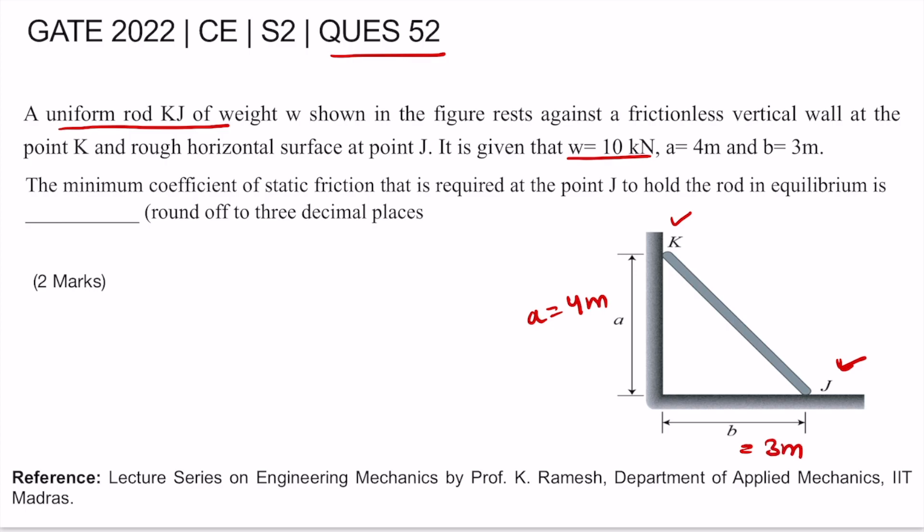The minimum coefficient of static friction that is required at point J to hold the rod in equilibrium position is? We need to give our answer by rounding it off up to 3 decimal places. It's a 2 marks question with no negative marking.